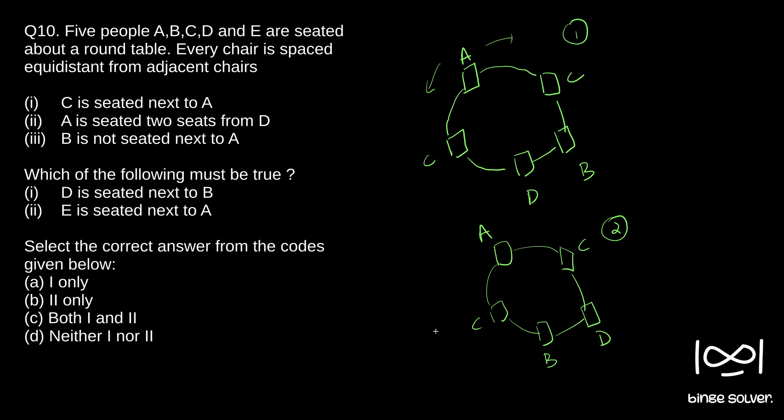Now which of the following must be true? So in both cases this has to be true. D is seated next to B. In both cases, as you can see, D is seated next to B. So this has to be true.